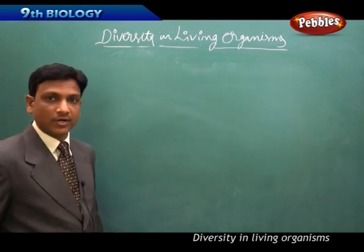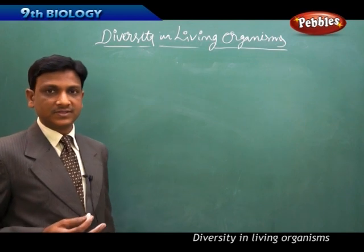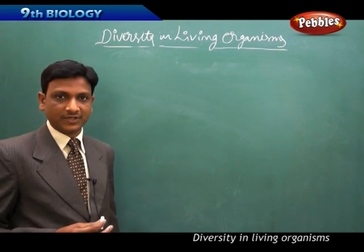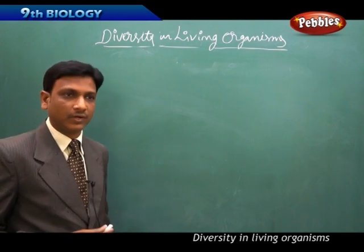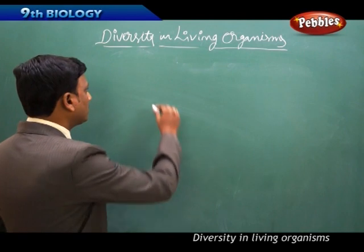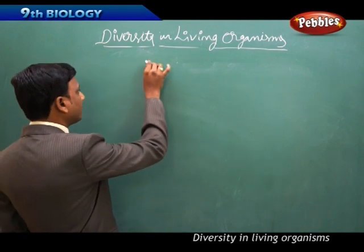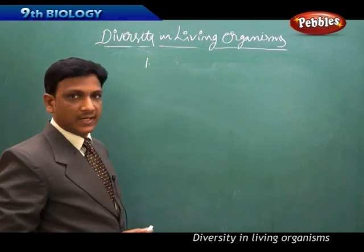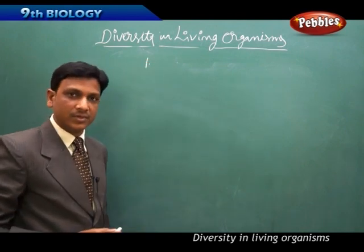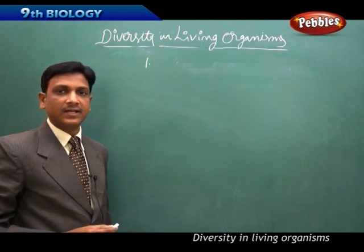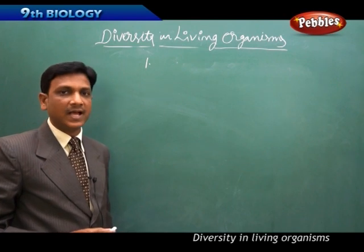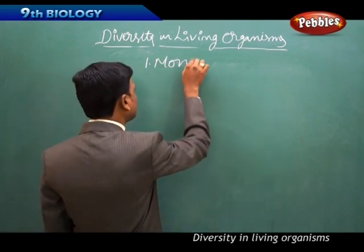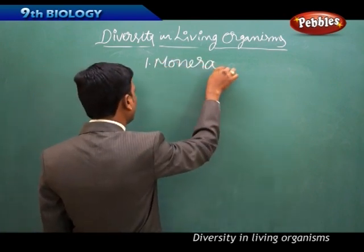Now we are going to talk about the different kingdoms according to Thomas Whittaker's classification of organisms. He has given five kingdoms: Monera, Protista, Fungi, Plantae, and Animalia. The first one we are going to discuss is Monera.